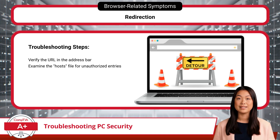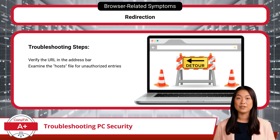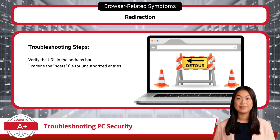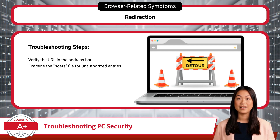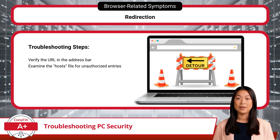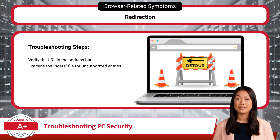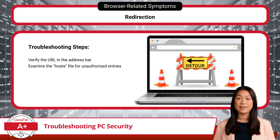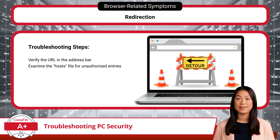One last browser-related symptom to look out for is redirection, which occurs when your browser unexpectedly takes you to an unintended URL. This is often caused by malware or unauthorized alterations to the hosts file. To address this issue, start by verifying the URL in the browser's address bar is correct, then check the hosts file for unauthorized entries. If you are not familiar with the hosts file, don't worry — that's covered next.